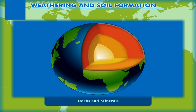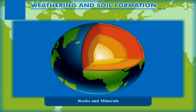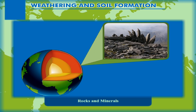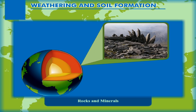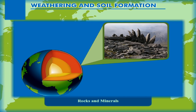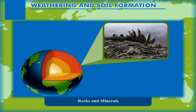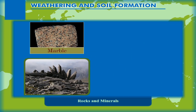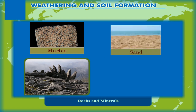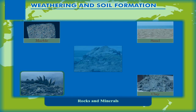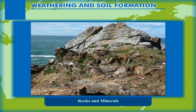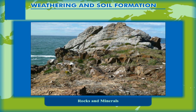Rocks and Minerals. The earth's crust is made up of different types of rocks. A rock is a natural deposit that forms the solid part of the earth's crust. They can be as hard as granite or marble, and can be as soft as particles of sand, clay or gravel. A rock is not a chemical compound but an agglomeration of minerals.